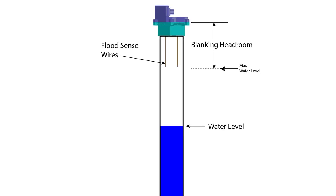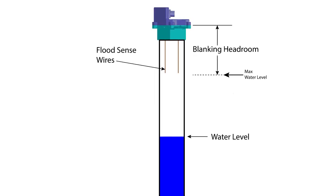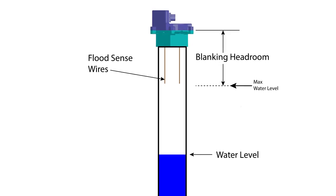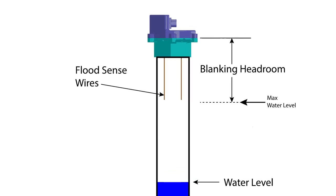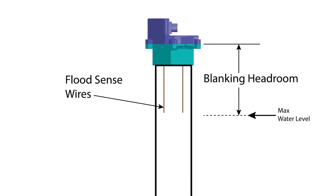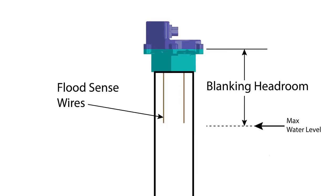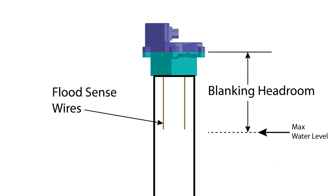All types of sonar measurement systems have a certain minimum distance where they can't measure anything. It's just too close. This is called the blanking headroom. In the Tank Friend, we use sensing wires that extend through this zone so that when the water level gets too close, the microcontroller detects this and switches over to a different flood warning mode instead of getting a corrupted reading.